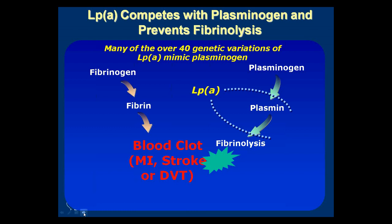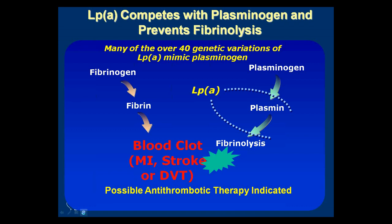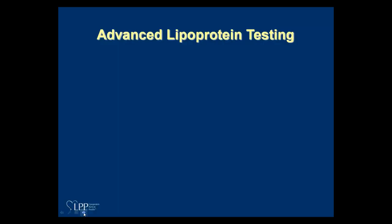LP little a is an inherited lipoprotein with about 40 genetic variations. If a person has it, we look at the fact that it's a small LDL, easily oxidized, and also possibly prothrombotic. This was also the subject of many questions that came in today.